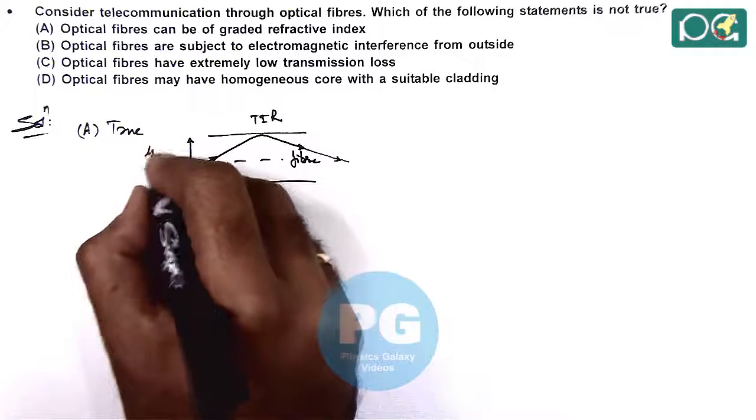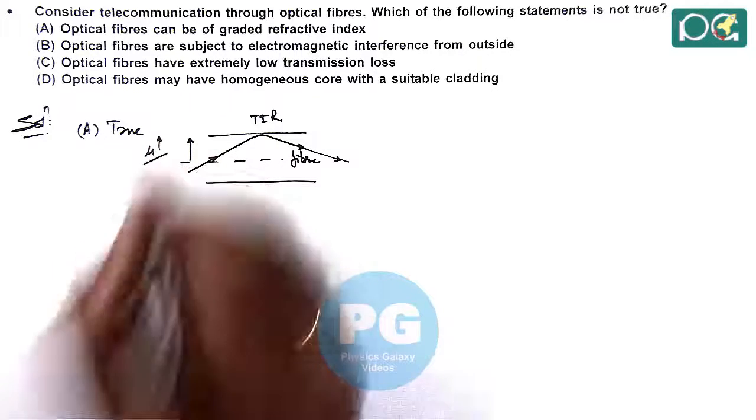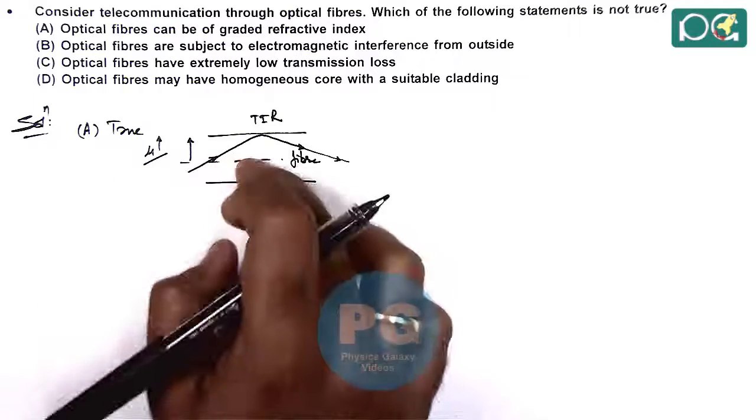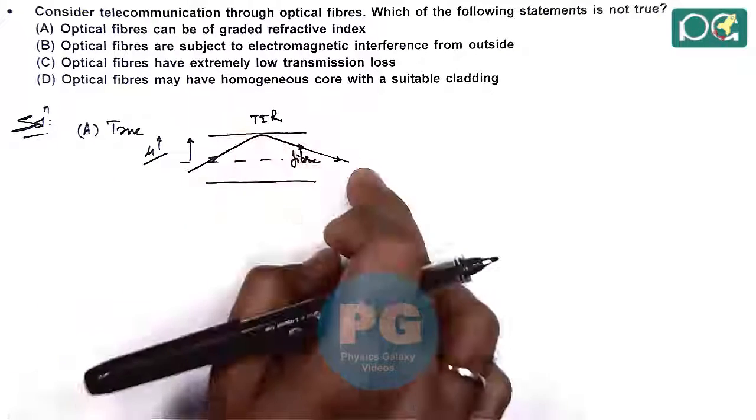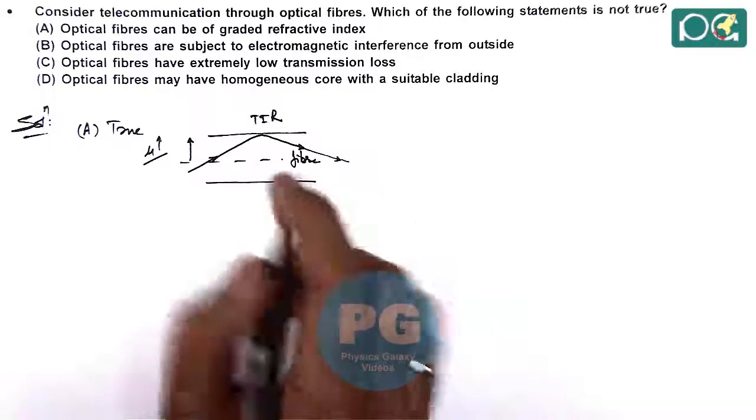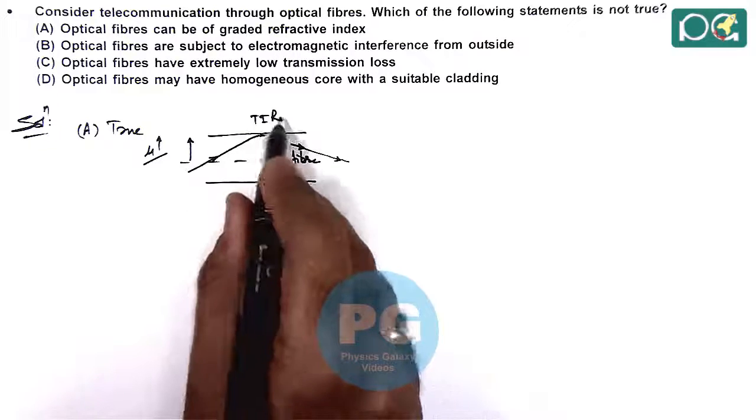Here the optical fiber refractive index can be graded and from the axis toward the sides of optical fiber, refractive index mu can be increasing. The reason is if mu is increasing at some point the reflection will cease and total internal reflection will take place and the purpose of optical fiber is fulfilled.